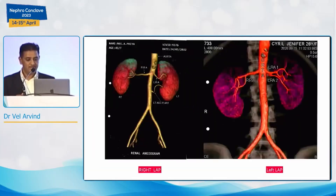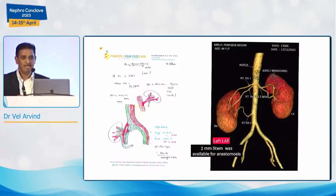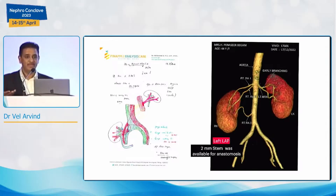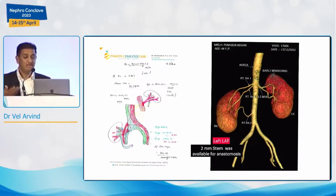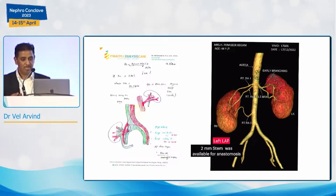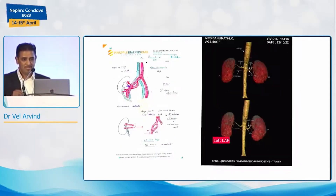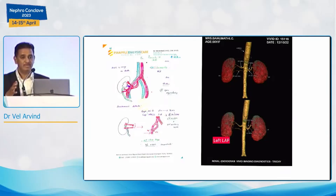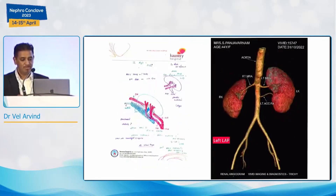After surgery, I always make a diagram immediately — for my memory. Any graft dysfunction: we should not always think about medical causes; some polar artery or hilar artery anastomosis could have been compromised. Post-operative hypertension one month, six months, or one year later — we have to look back at what went wrong. A ready-made diagram is very useful. As soon as I come out of the theater, I always make a diagram and put it on the first page of the patient's file.